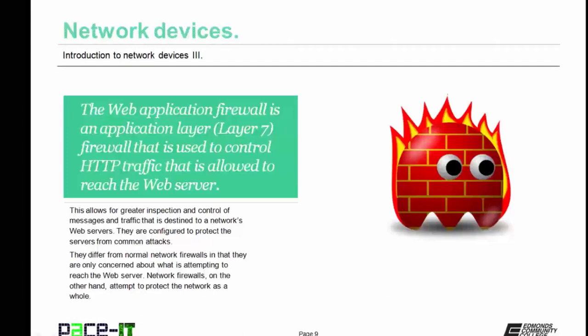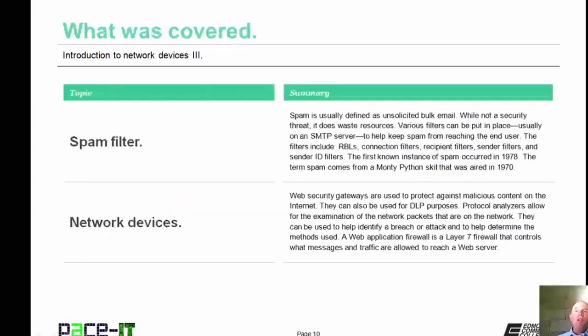The web application firewall is an application layer, or layer 7, firewall that is used to control HTTP traffic allowed to reach the web server. This allows for greater inspection and control of messages and traffic destined to a network's web servers. They are configured to protect the servers from common attacks. They differ from normal network firewalls in that they are only concerned about what is attempting to reach the web server, whereas network firewalls attempt to protect the network as a whole — making the web application firewall much more specialized and allowing for more granular control.